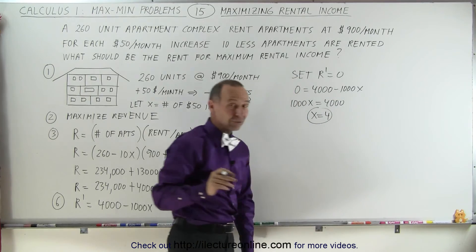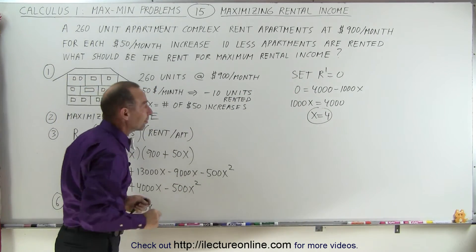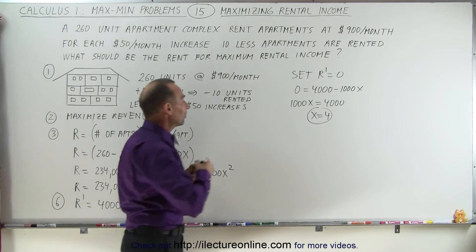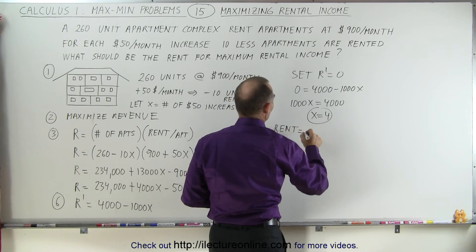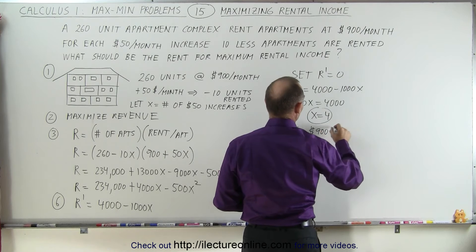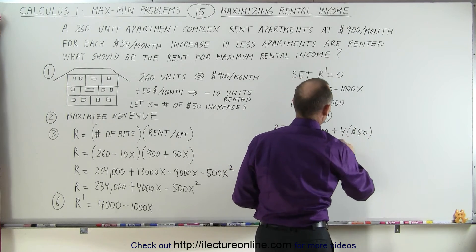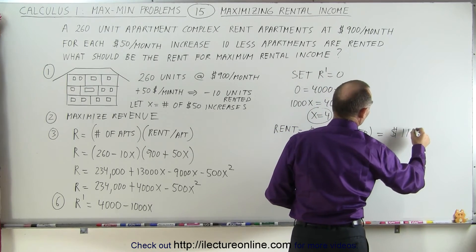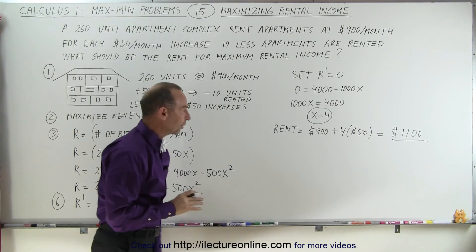Remember what x represents: the number of $50 increases. So there will be four $50 increases. The rent is therefore $900 + 4 × $50 = $900 + $200 = $1,100 per month to maximize rental revenue.